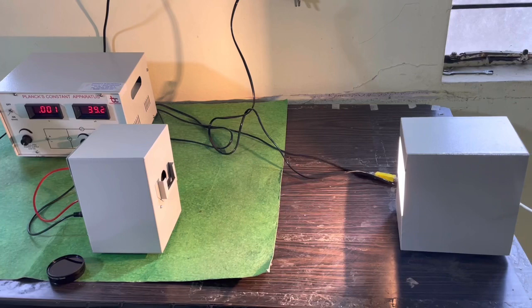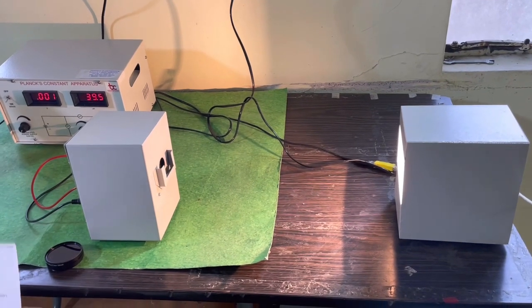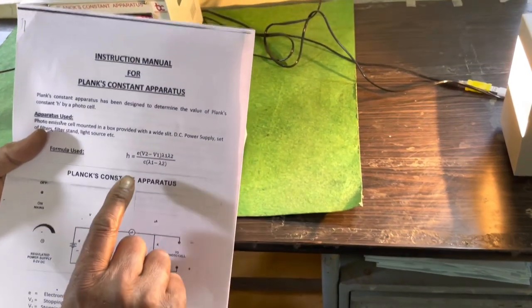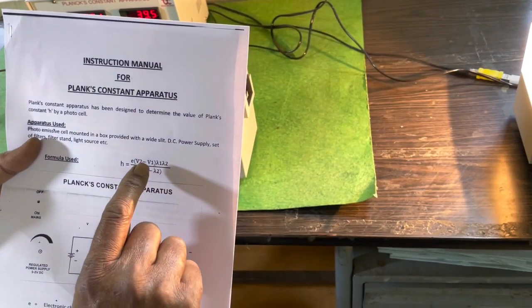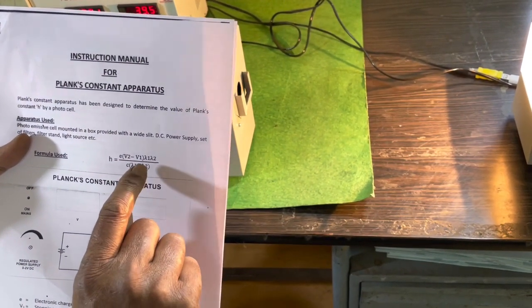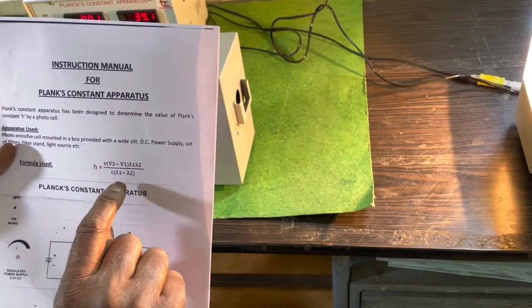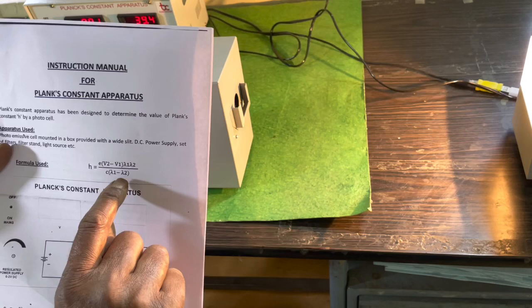Now we shall see the working of this experimental setup. The formula for Planck's constant is given by: h = e(V₂ - V₁) × λ₁ × λ₂ / (c × (λ₁ - λ₂)).